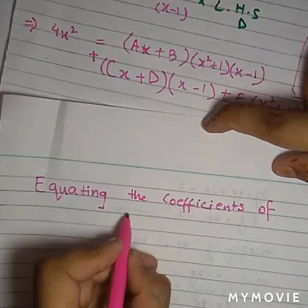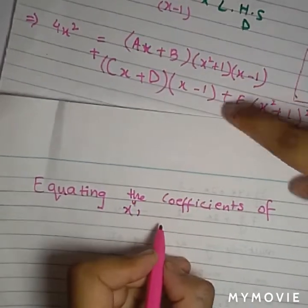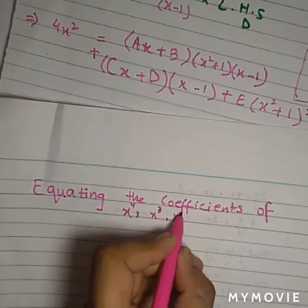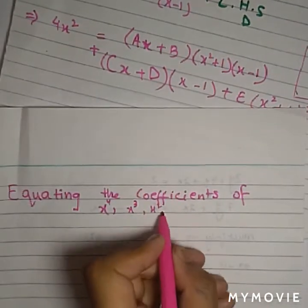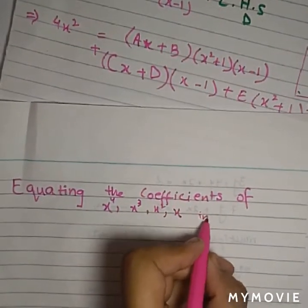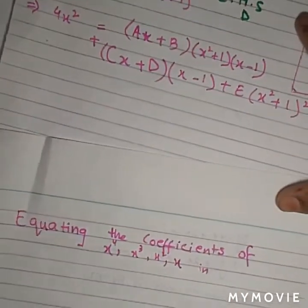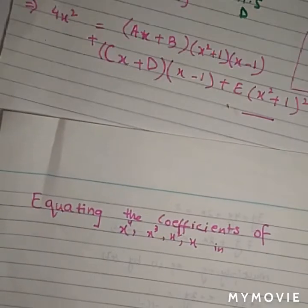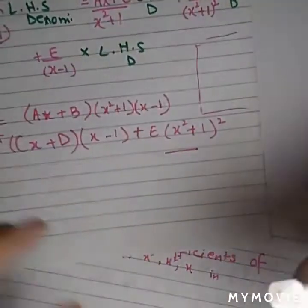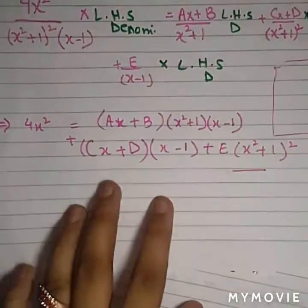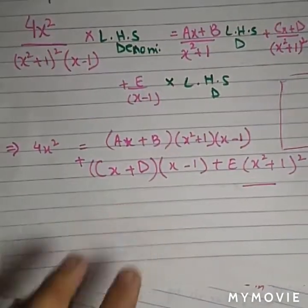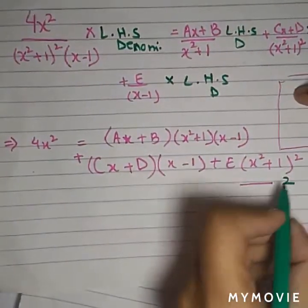Now we have to equate the coefficients of x⁴, x³, x², and x in this equation. Name this equation as equation 2, because equation 1 is already named. Don't name it the same. This is equation 2.